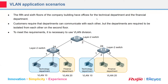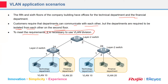Let's continue with the VLAN configuration. The scenario: the fifth and sixth floors of a company building have offices for the technical department and the financial department. The customer requires that departments can communicate with each other but must be isolated from each other on the second floor. To meet this requirement, it's necessary to use VLAN division. VLAN means a single broadcast domain.